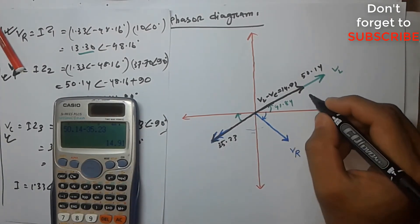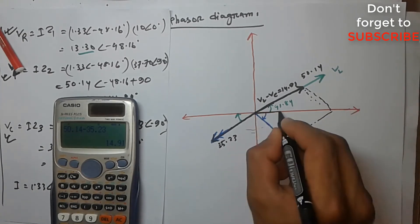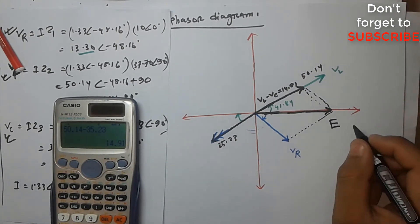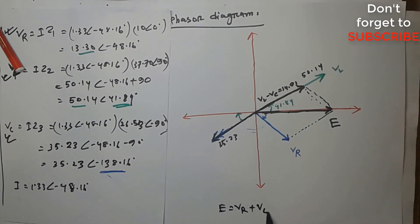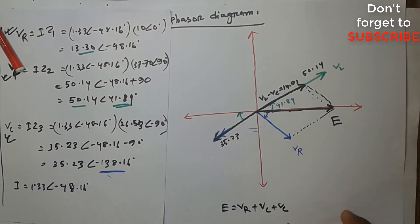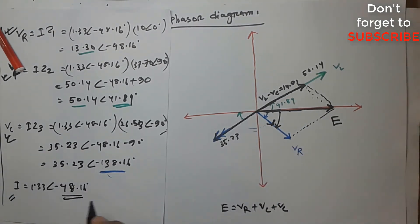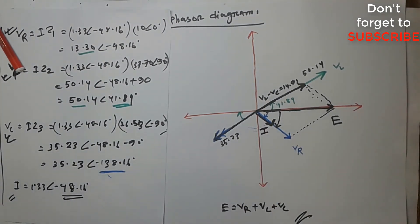I am going to do the resultant. This is the resultant, this is the total. After calculating, we are at 1.33 Amps to form the actual total. I am going to participate in the phasor diagram. Thank you.